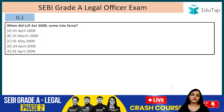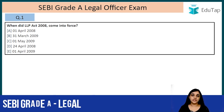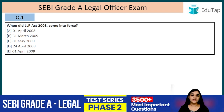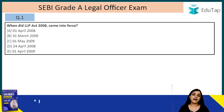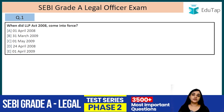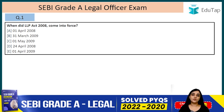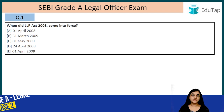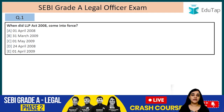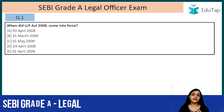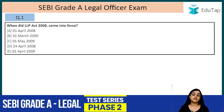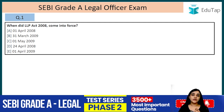Before diving into the questions, we must know what is LLP — what is a limited liability partnership. A limited liability partnership is a corporate structure which has some features of a partnership firm and some features of a company. The liability of the partners is limited. Unlike a partnership firm where all partners were agents to each other, in LLP your liability is limited and you are not agents to the other partners — you are agents to the LLP only. You cannot be made personally liable.